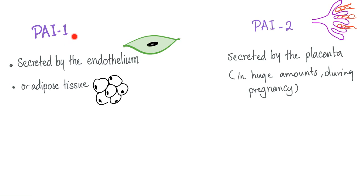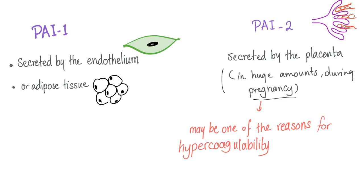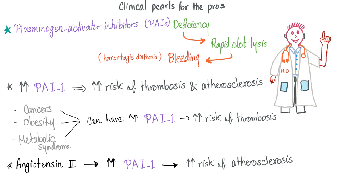The two types of plasminogen activator inhibitor are PAI1 and PAI2. PAI1 is secreted by the endothelium as well as adipose tissue. PAI2 is secreted by the placenta. Therefore, in pregnancy, the amount of PAI2 is going to increase.